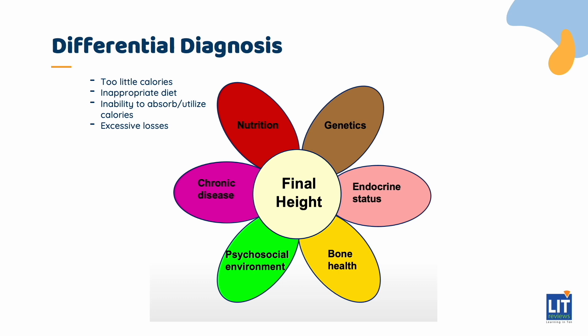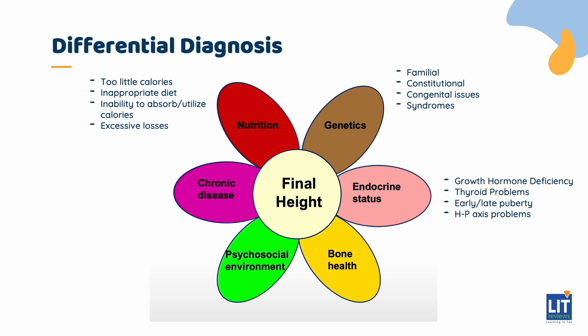Genetic factors to be considered in a growth assessment include familial short stature, constitutional delay of growth, congenital problems, and genetic abnormalities. Endocrine factors include growth hormone deficiency or resistance, thyroid problems, abnormal puberty, adrenal problems, and other hypothalamic pituitary axis problems.